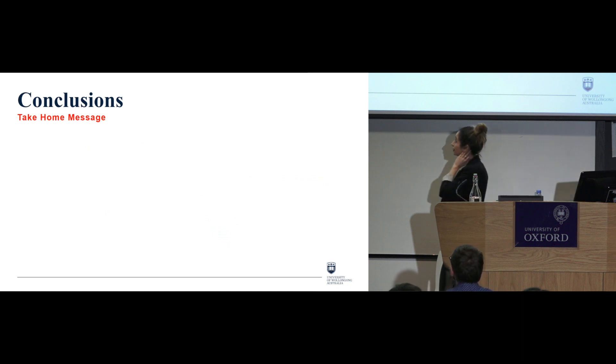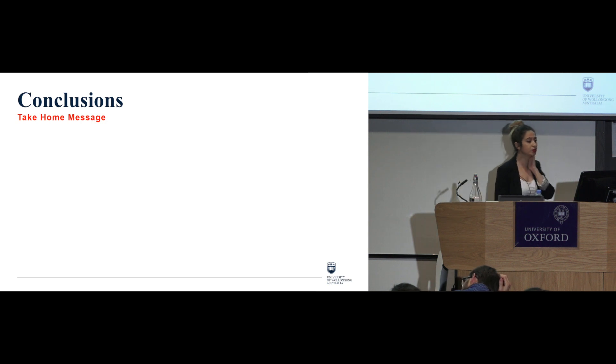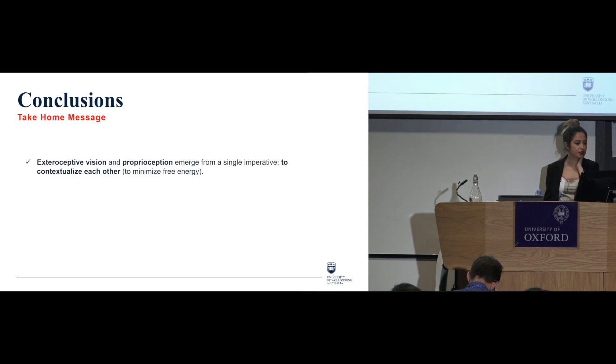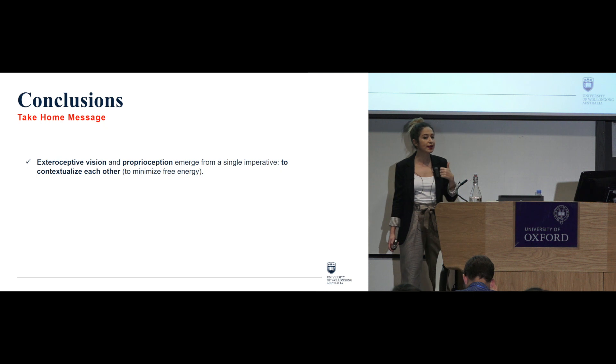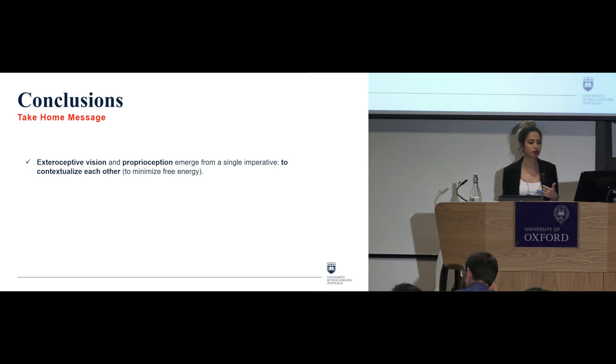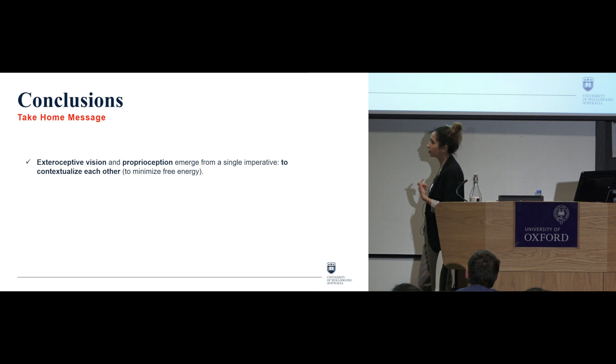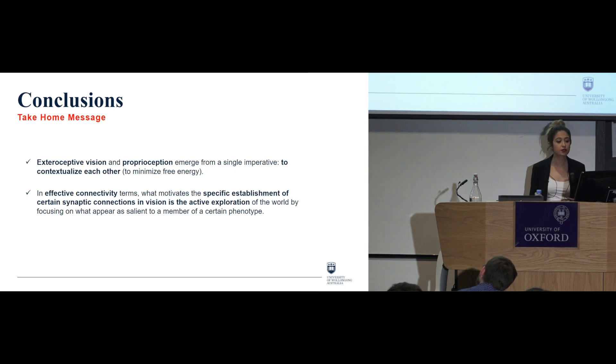Okay, good. Now bringing this to an end and take home message, what I want to say and what I want to research on building on this is that, well first I think there are a few quite relevant and important points to take from here is that exteroceptive vision and proprioception emerge from a single imperative, which is to contextualize each other in the sense that they all are minimizing the free energy. In effective connectivity terms, then what motivates the specific establishment of certain synaptic connections in visions is the active exploration, and this is the bit that I'm quite interested in, of the world, by focusing on what appear as salient to a member of a certain phenotype.